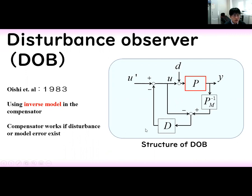The compensator works if disturbance or model error exists. When disturbance and model error do not exist, then this compensator doesn't work.